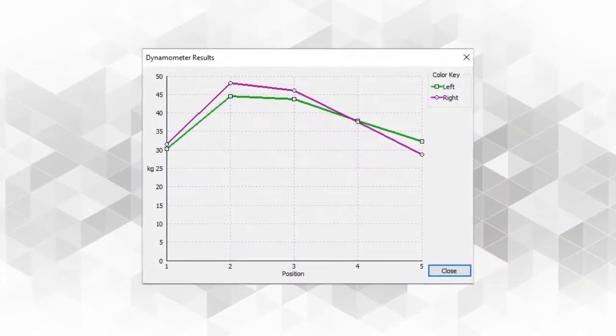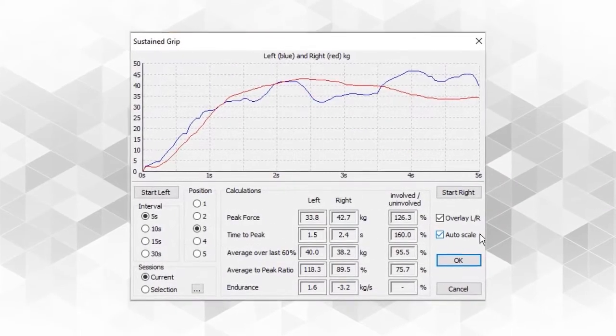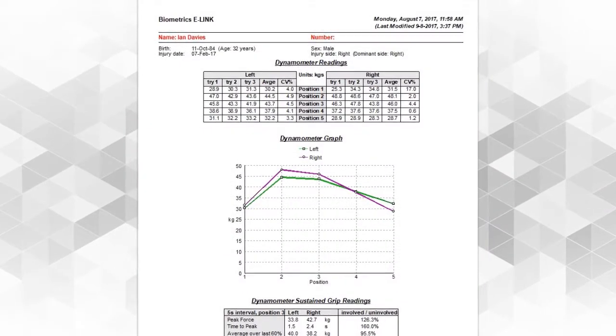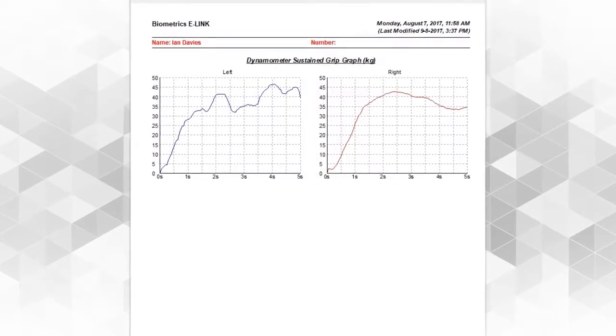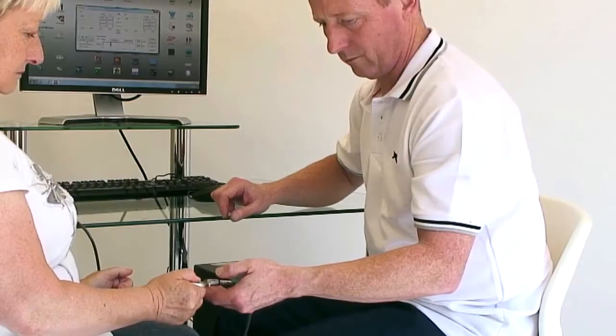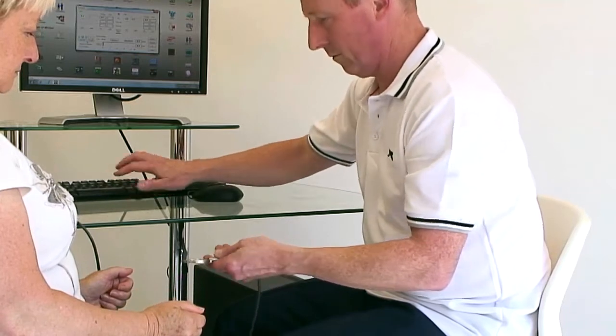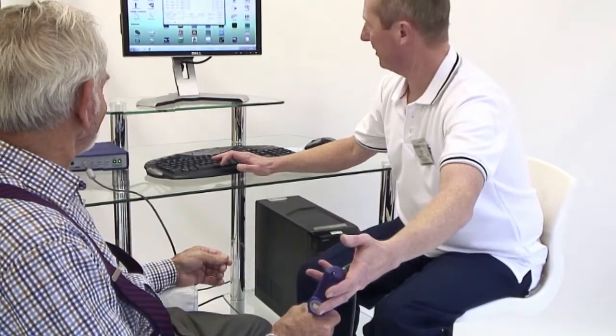The hand kit is the ideal module to quantify and monitor the effectiveness of various interventions for the upper extremity throughout the whole rehabilitation process, even in the earliest stage or for weak patients with chronic debilitating conditions.